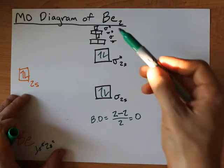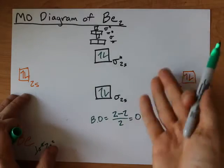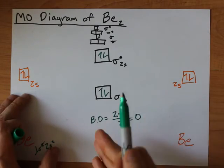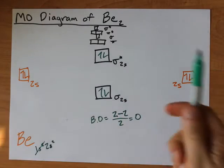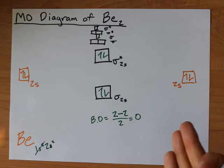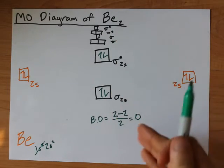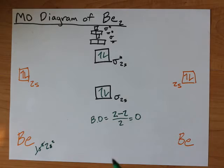A bond order of zero means the BE2 will not be a stable structure. They do not bond together and in fact BE2 has no known dimer even at high temperatures in the gas phase where there's a lot of stuff that can happen.